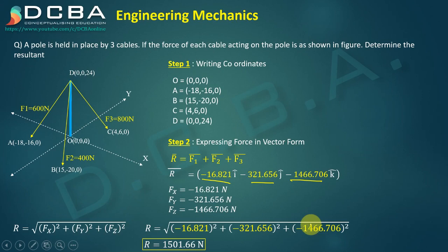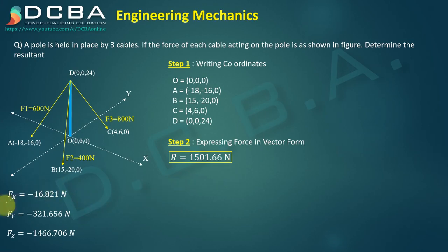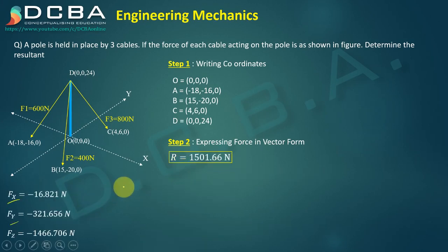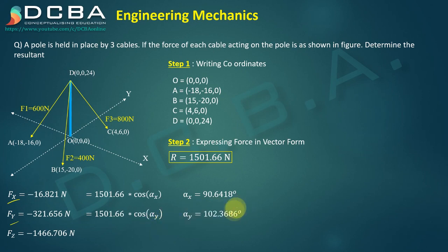And now after finding the resultant and all the fx, fy, and fz, we can find the direction cosines. So fx = R cos αx, αx comes out to be 90.6418 degrees. αy comes out to be 102.386 degrees, and αz comes out to be 167.6135 degrees.